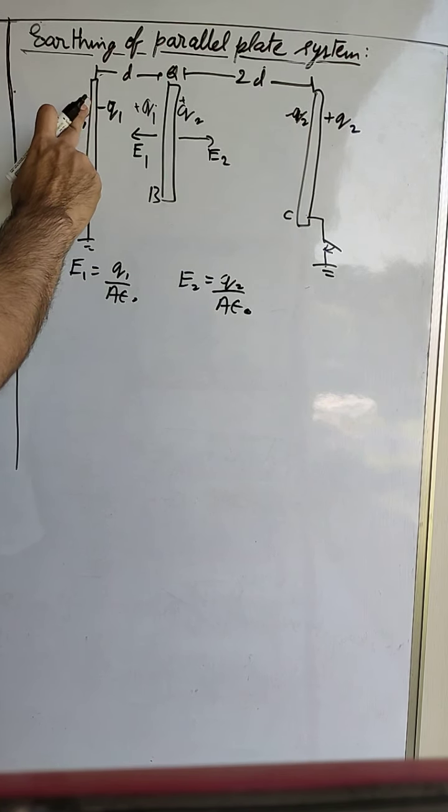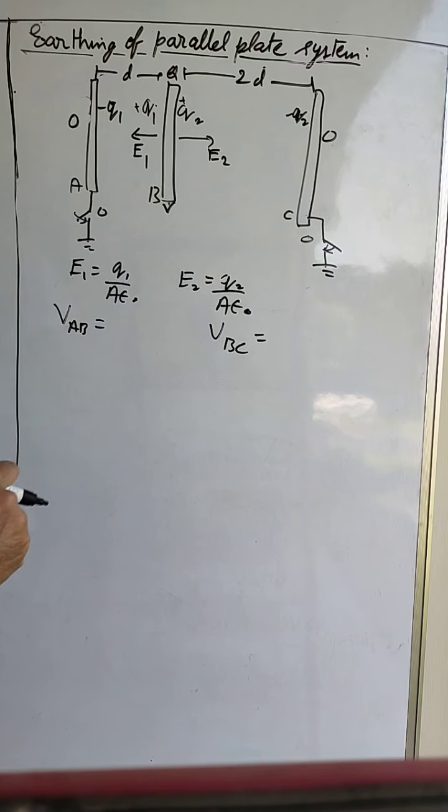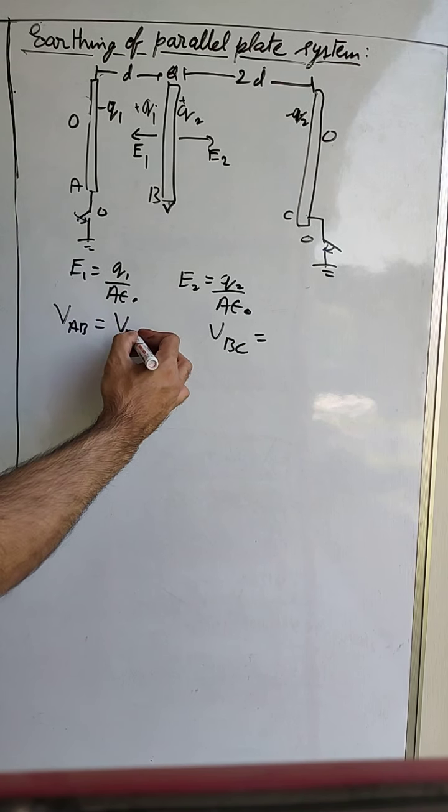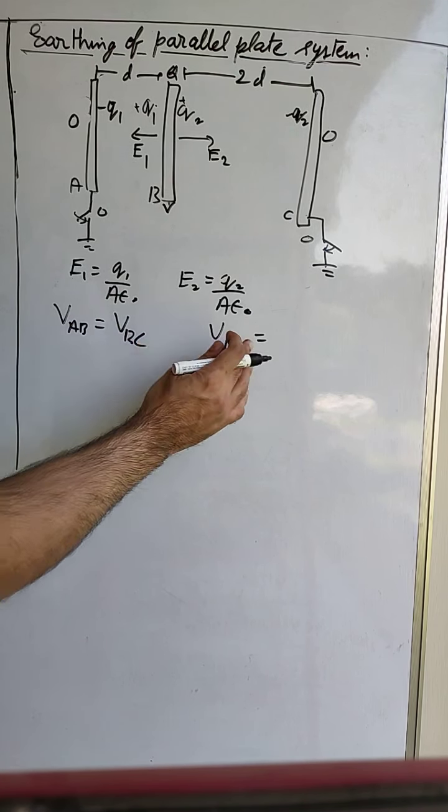If A and C are both at 0 potential and B is at potential V, then the potential difference between A and B is V minus 0, and between B and C is also V minus 0. So the potential difference between these two plates equals the potential difference between B and C, giving us VAB = VBC.